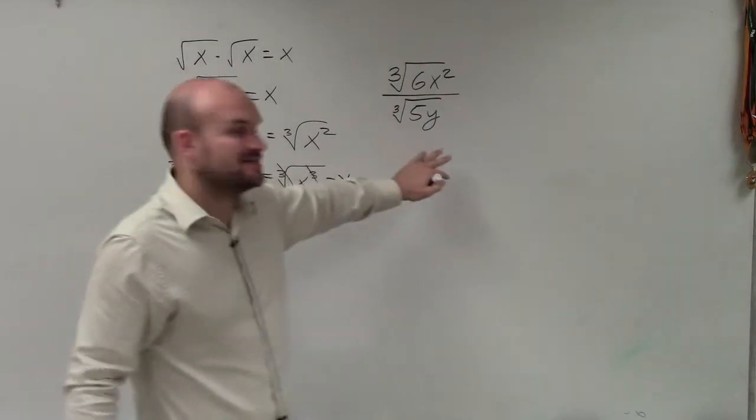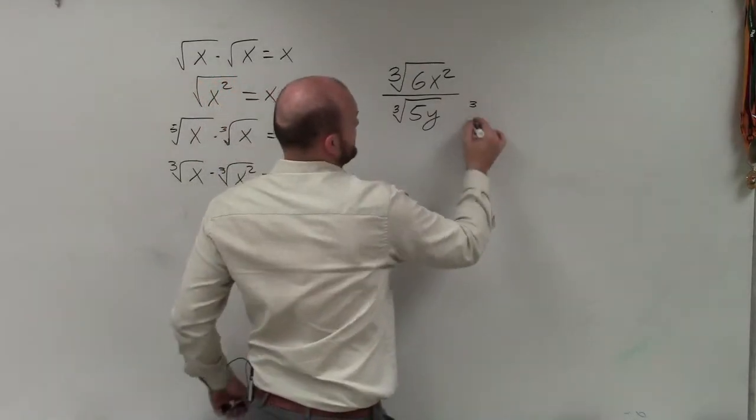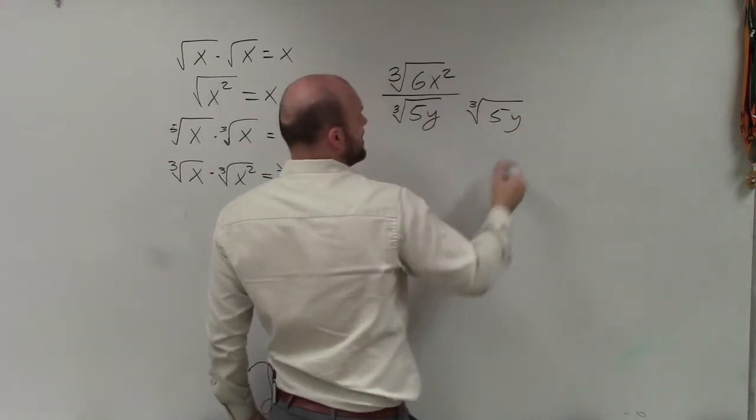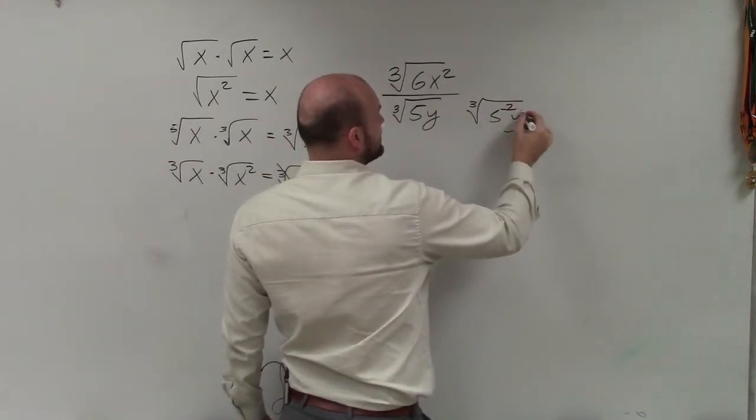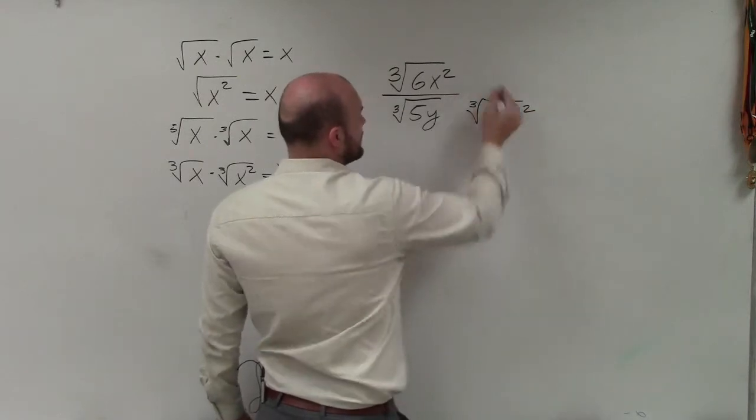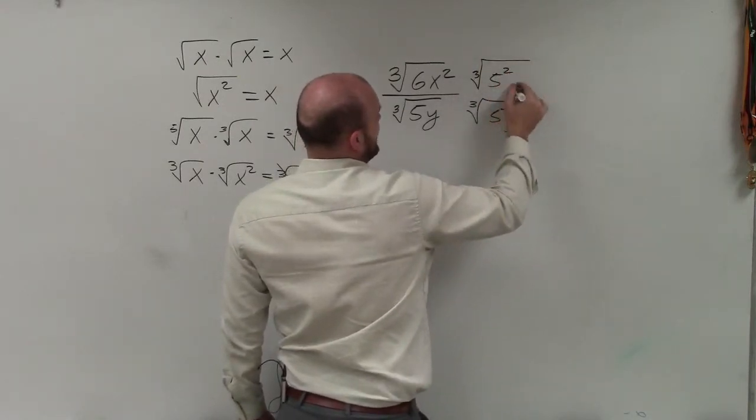So I'm looking into rationalizing the denominator. I'm not going to want to rationalize the denominator by 5y. I'm going to want to rationalize the denominator by 5 squared y squared. And whatever I do in the bottom, I have to do up top.